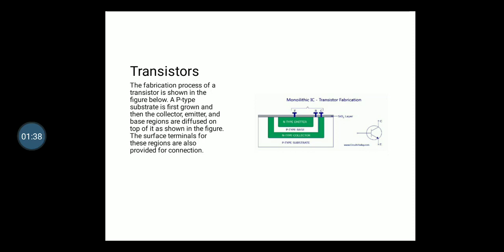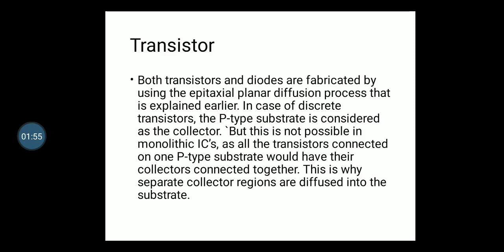The fabrication process of a transistor is shown in the figure below. A p-type substrate is first grown and then the collector, emitter, and the base regions are diffused on top of it. The surface terminals for these regions are also provided for interconnections.